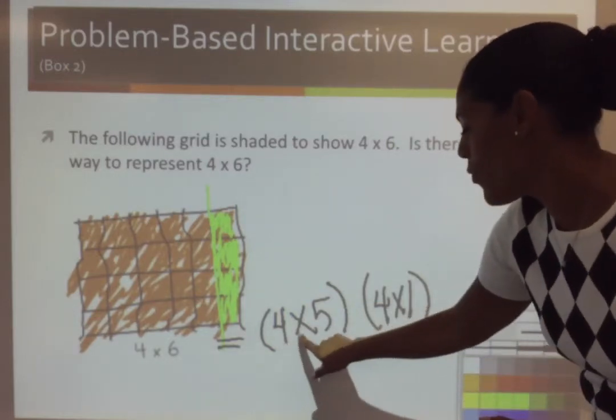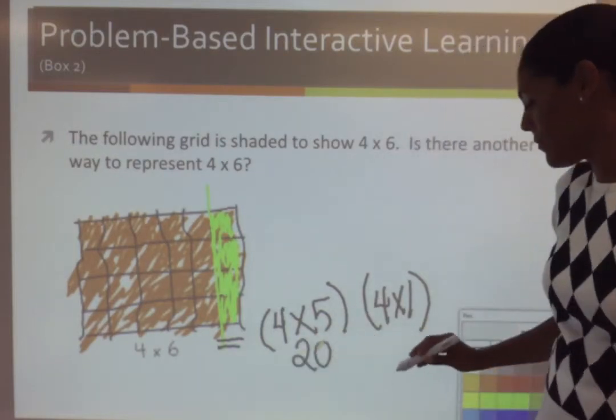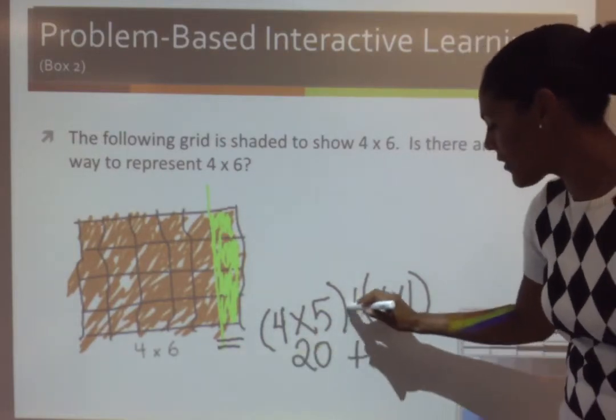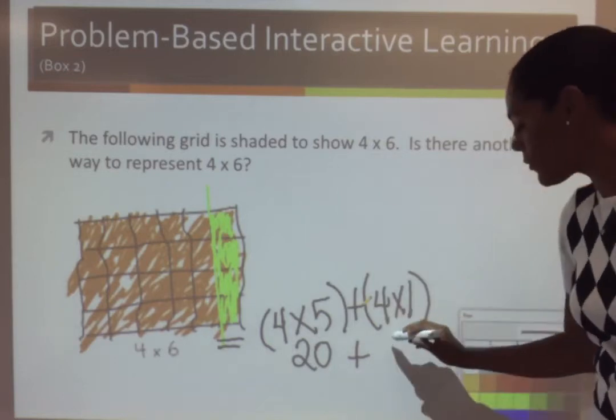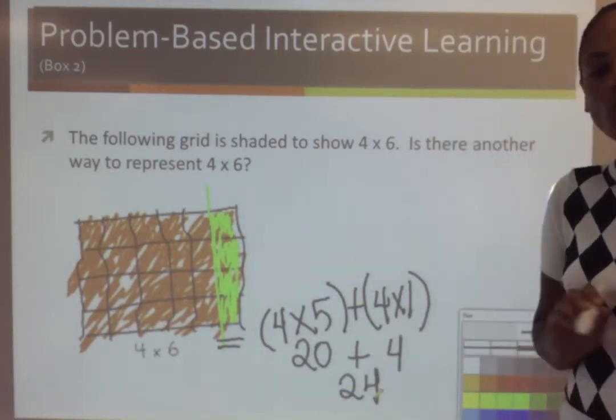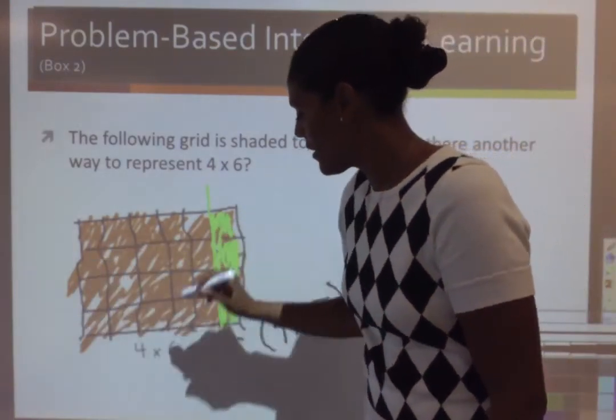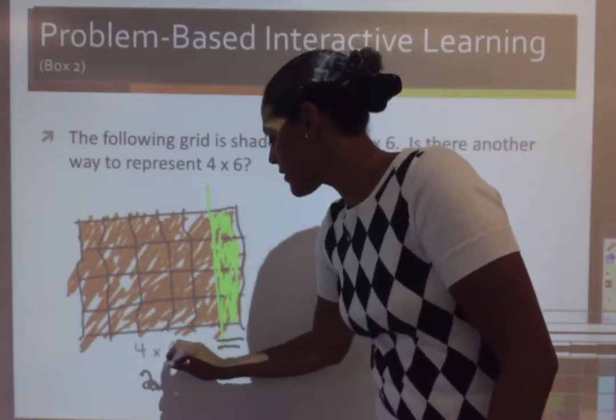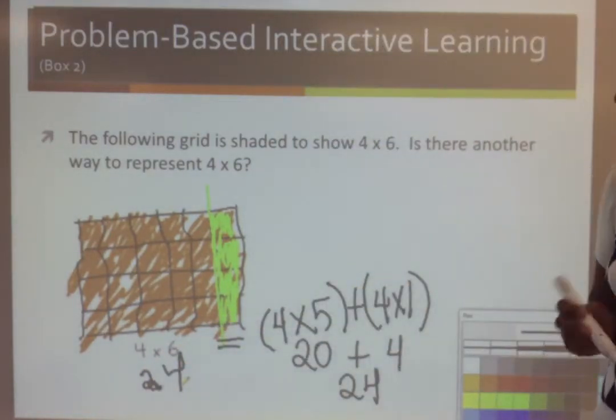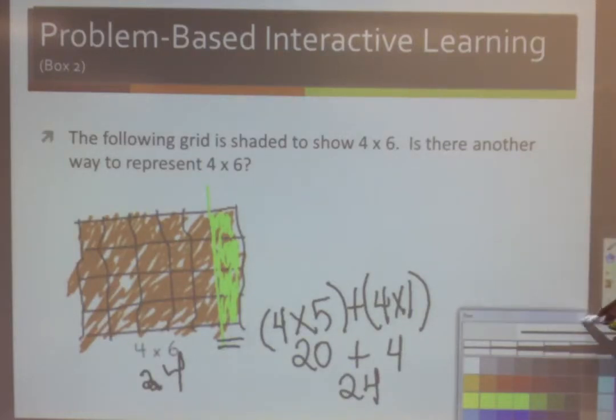And you will see that 4 times 5 is 20. And if I add it together with 4 times 1, which is 4, I still get 24. And that is the same answer for this side, 24. And that's why you use the distributive property to help you remember facts. Let's try another.